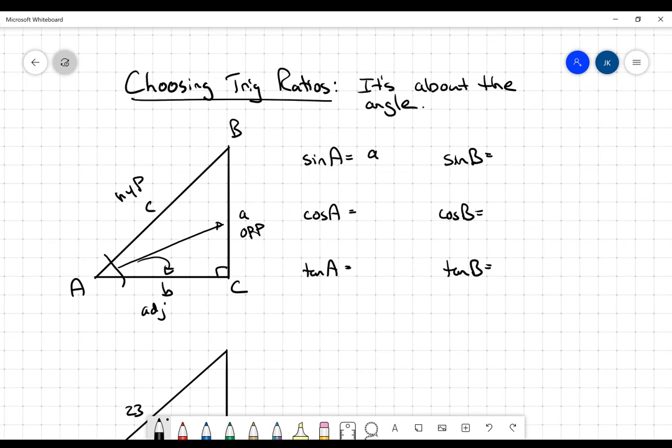So the sine ratio is going to be little a over C, opposite over hypotenuse. Cosine is going to be the adjacent, B over C. And tangent will be the opposite over the adjacent.